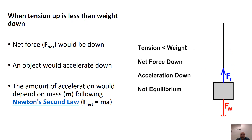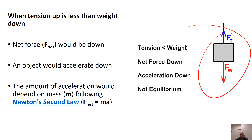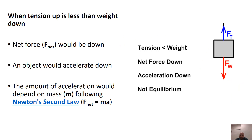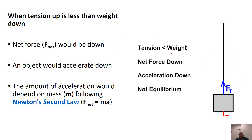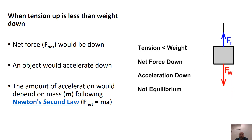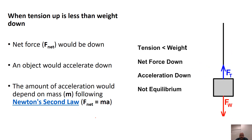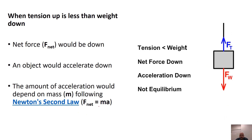When tension is less than weight, we're going to have an acceleration. If the net force is anything other than zero, it's going to accelerate one way or the other. In this case, the weight is bigger than the tension force, so the net force is down. We take the weight, subtract the tension force from it — that's the net force. If we know the mass, we can use the Fnet equation to figure out the downward acceleration.